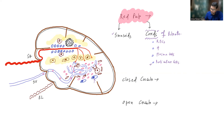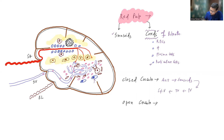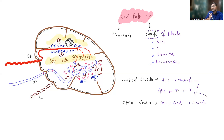In the red pulp, closed circulation means arterioles open directly into the splenic sinusoids, then pulp vein, trabecular vein, and splenic vein. In open circulation, arterioles open into the cords of Billroth, and RBCs negotiate through the openings in the splenic sinusoids to enter and then follow the same venous outflow path.